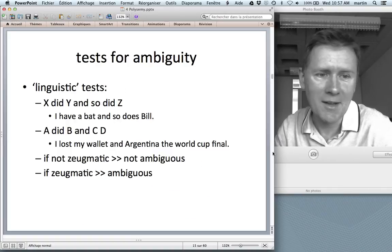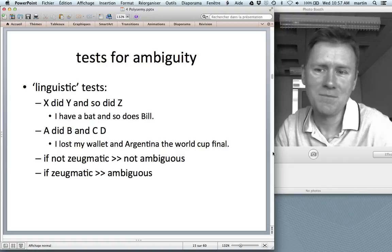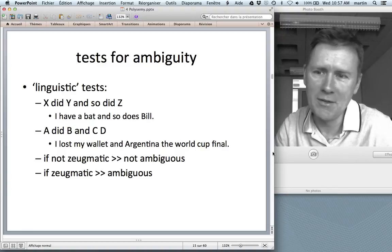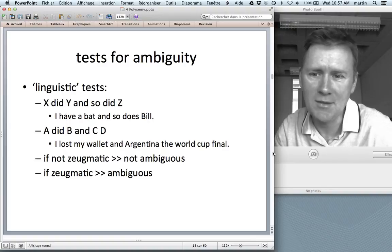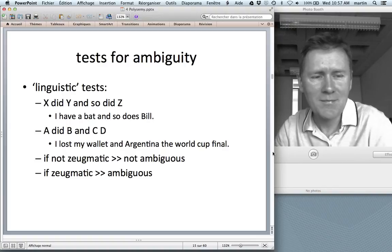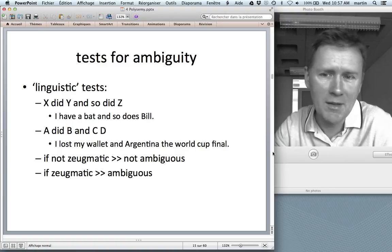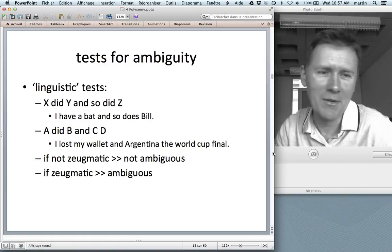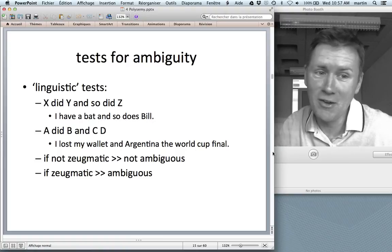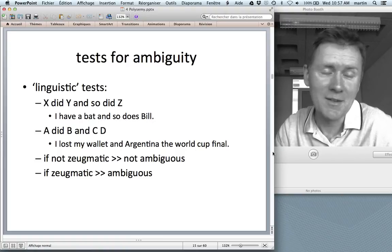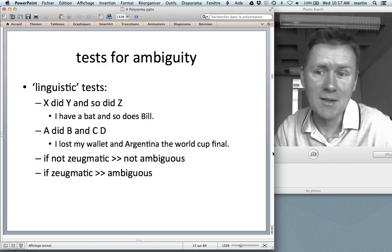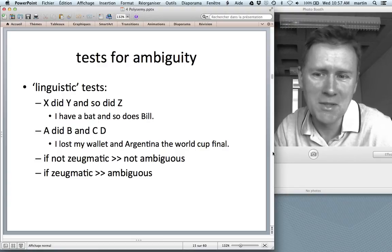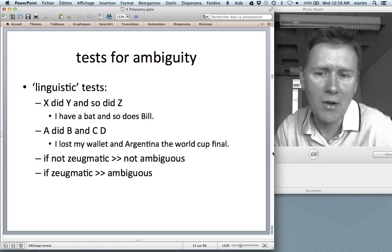Then there is a battery of linguistic tests that have been developed. There's a so-called do-so test where you insert the candidate word into the sentence X did Y and so did Z. So sentences like I have a bat and so does Bill. Now, if I say that and want to mean by that that I have an animal bat and Bill has a sporting instrument bat, then you would say, oh, this is, you know, slightly funny and not funny at the same time. So this effect is called Zeugma. If you get this kind of Zeugma effect, then the item is ambiguous. If you don't get a Zeugmatic effect, then the item is not ambiguous.